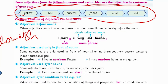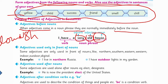Varying position of adjectives in sentences: when an adjective comes in a noun phrase, it is normally immediately before the noun. Adjective hamesha noun se pehle hota hai — for example, 'I have a very old house.' Here 'house' is your noun, 'old' is your adjective, 'very' is your adverb, and 'have' is your verb.